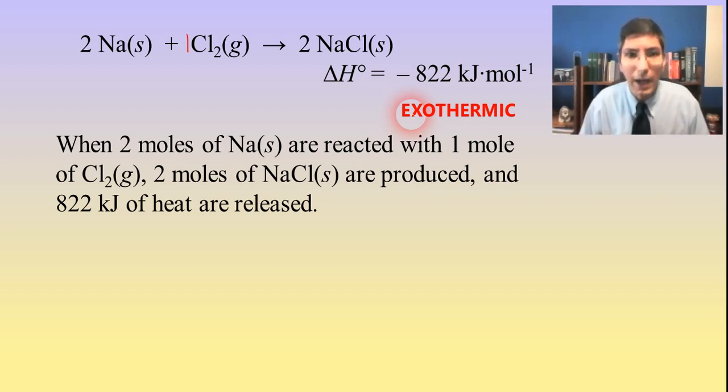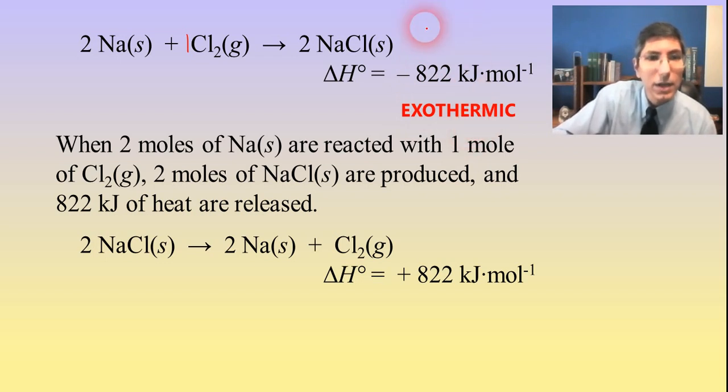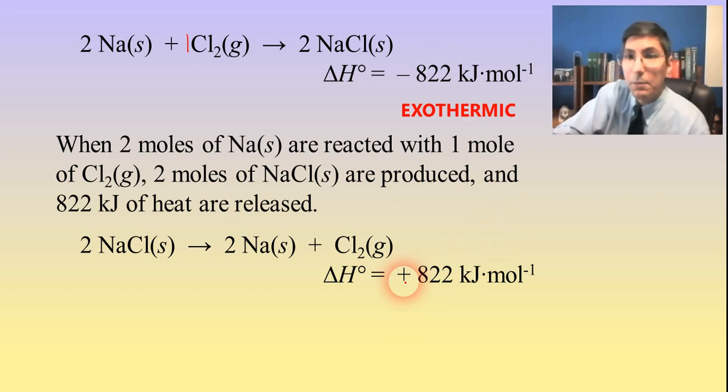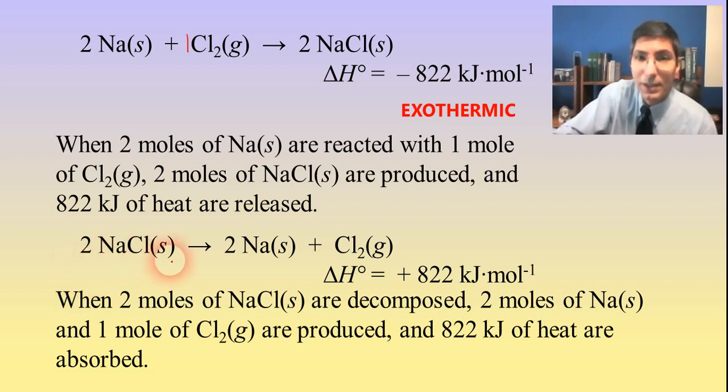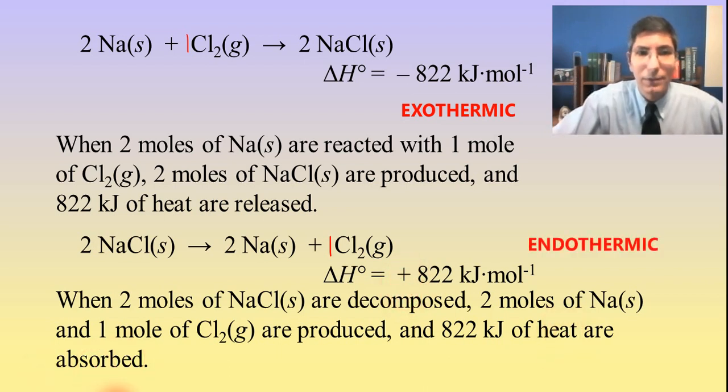Now, what happens if we decide to flip this reaction around? If we have the reverse of this, which we can carry out, notice what happens to the sign of delta H. It becomes the opposite of what it was before. So it was negative, and now it's positive. And this basically is telling us that if we take two moles of sodium chloride solid and we decompose it, we're going to get two moles of sodium metal and one mole of chlorine gas, and 822 kilojoules of heat are going to be absorbed. The positive sign tells us that that reaction is endothermic.